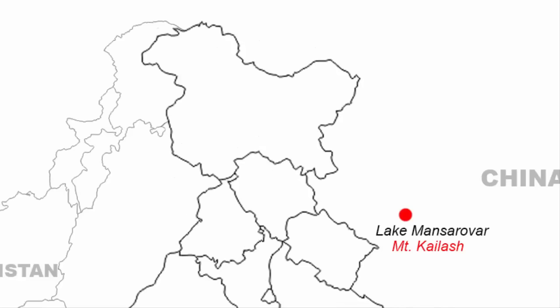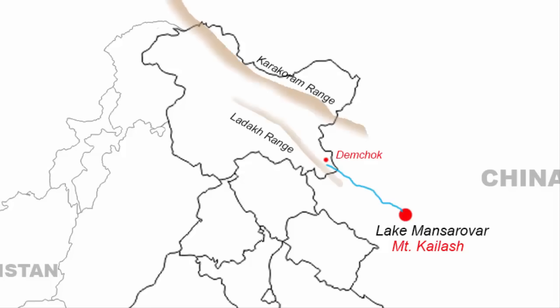The Indus River rises from Mansarovar Lake, which is more than 5000m above sea level. The river flows north-west and enters the Ladakh region of India from a place called Demchok. Here is the Karakoram range, and here is the Ladakh range. After entering India, the Indus River flows between the Karakoram and Ladakh ranges, but more closer to the Ladakh range.